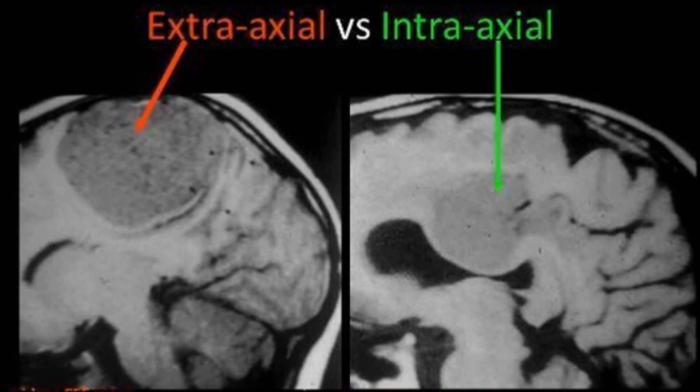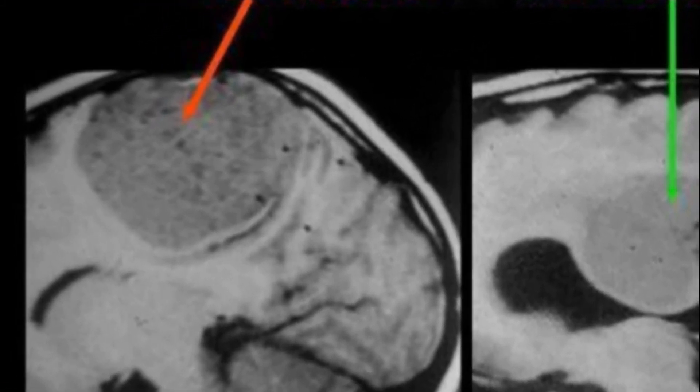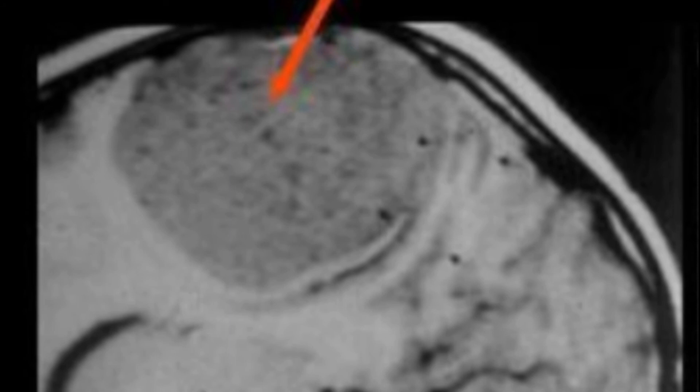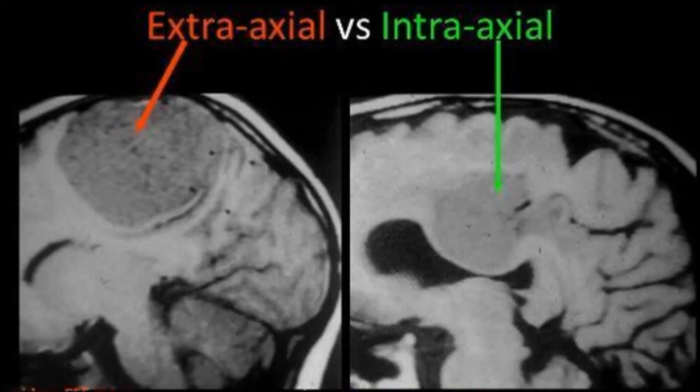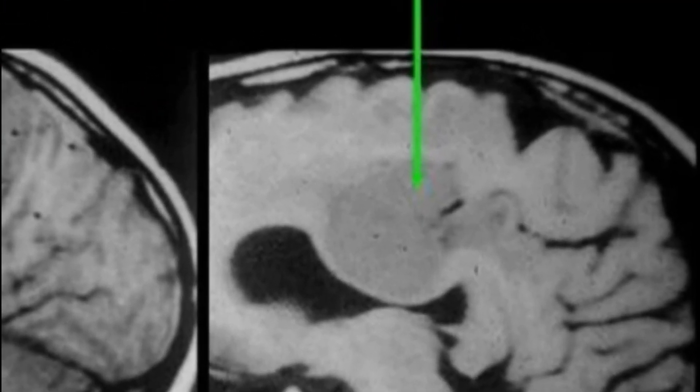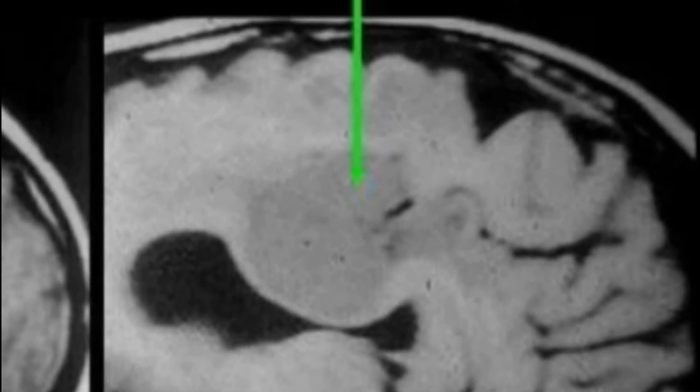On to our last classification for today: whether a tumour is extraaxial or intraaxial. Extraaxial tumours are located outside the brain parenchyma — as you can see in this picture — arising from the meninges and the nerve sheaths. Intraaxial tumours are located within the brain parenchyma, as shown here.